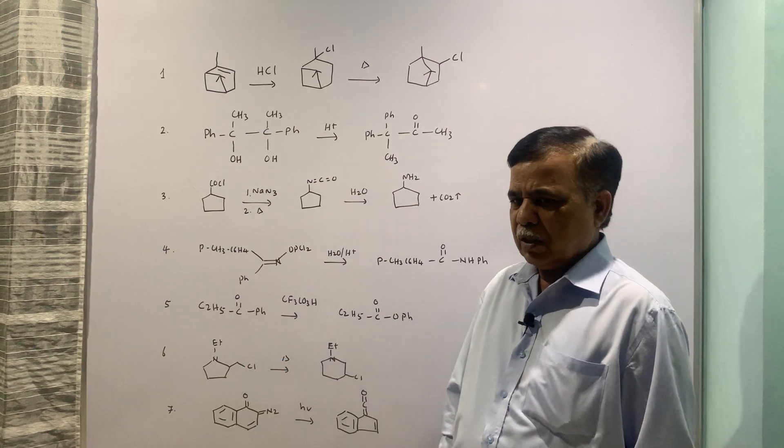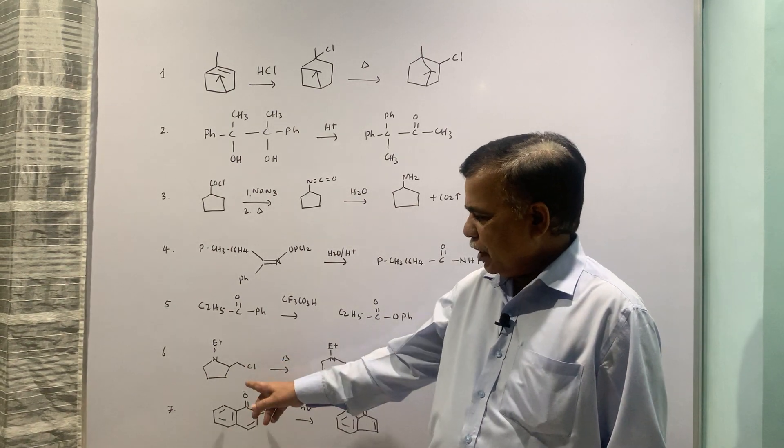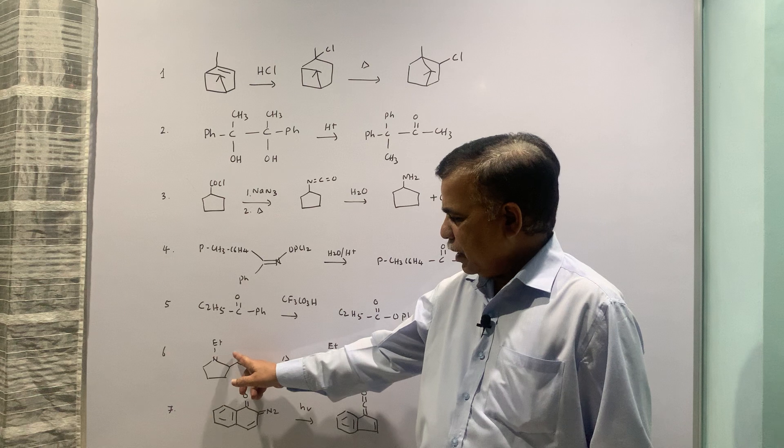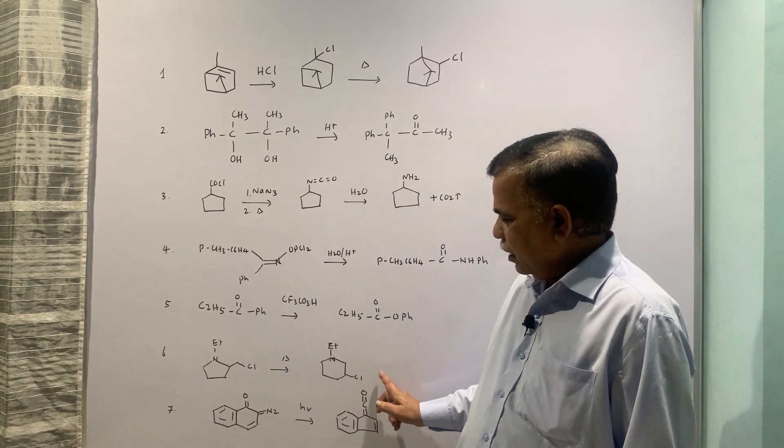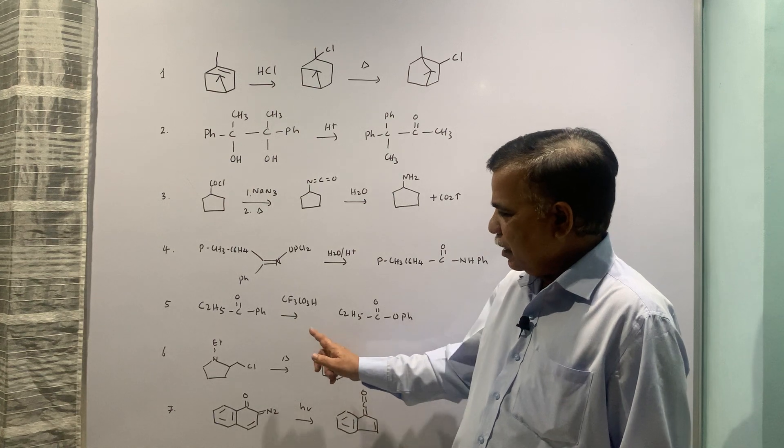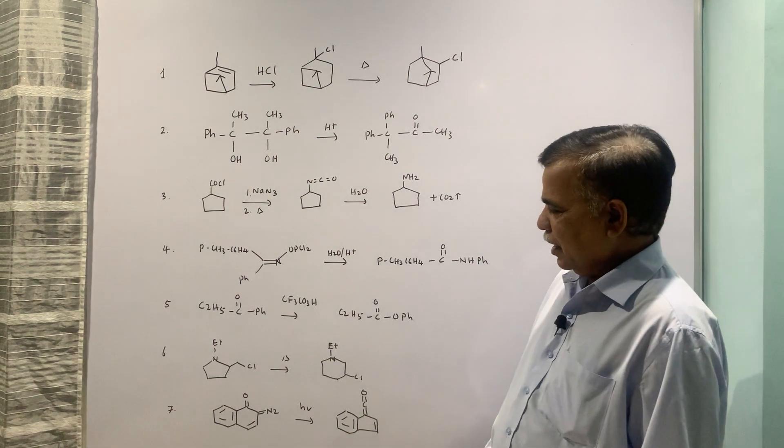This is Sommelet-Hauser rearrangement. Nitrogen lone pair attacks, the Cl goes off and then Cl- attacks and you open that three-membered aziridine ring.